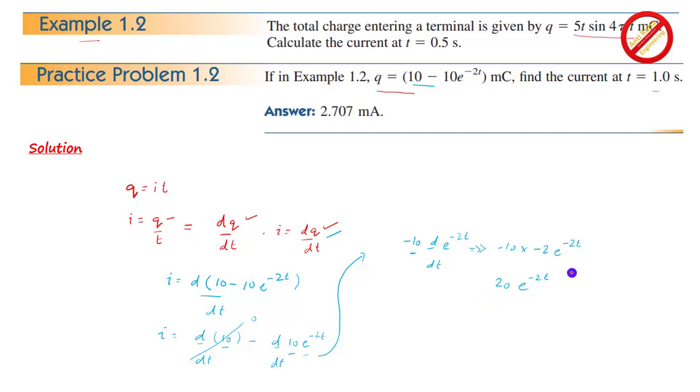20 exponential minus 2t. Now we substitute t equal to 1.0 second. This will get 2.707 mA. So this is the solution here.